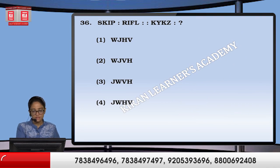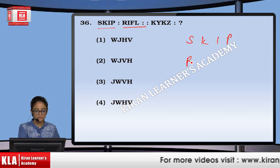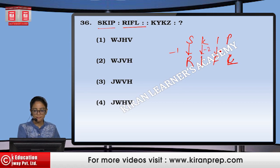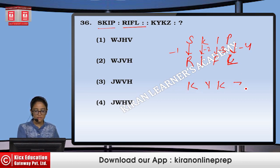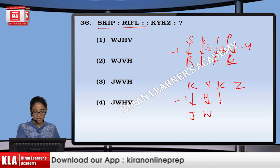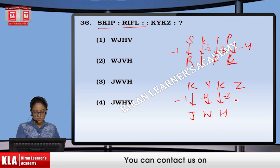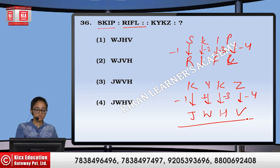Next, SKIP is written as RIFLE. S to R is minus 1, K to I is minus 2, I to F is minus 3, and P to L is minus 4. Similarly, for KY or KZ: minus 1 gives J, minus 2 gives W, minus 3 gives H, and minus 4 gives V. So the answer becomes option number 4.